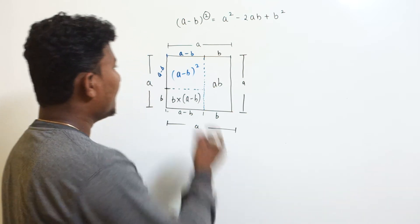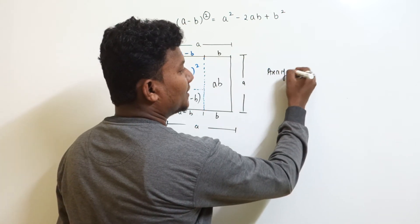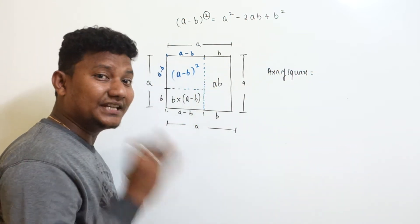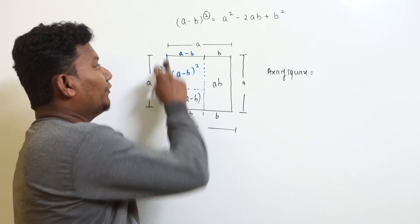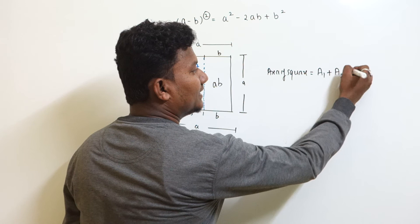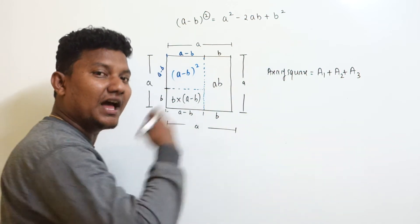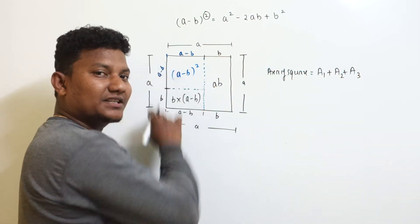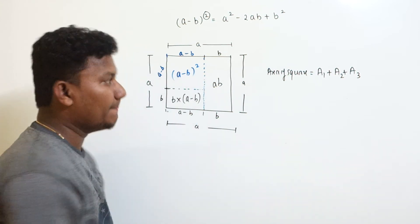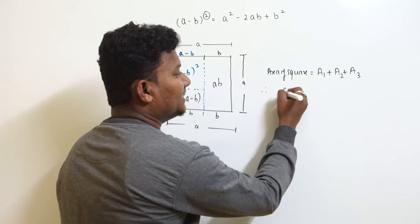Now let's find the area of the complete square. Inside we have three boxes: one, two, three. So the area of the complete square equals area 1 plus area 2 plus area 3 — combining them gives the full square. The area of the square with side 'a' is a squared. Area 1, which is a square with side (a minus b), gives (a minus b) whole squared.